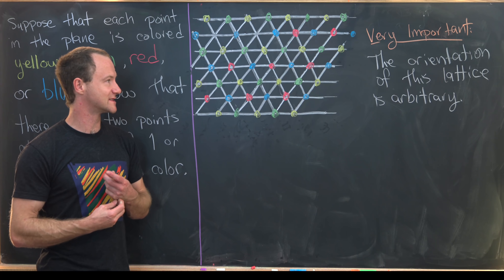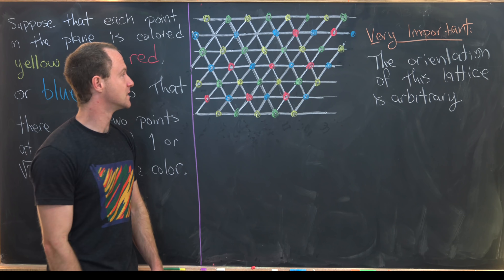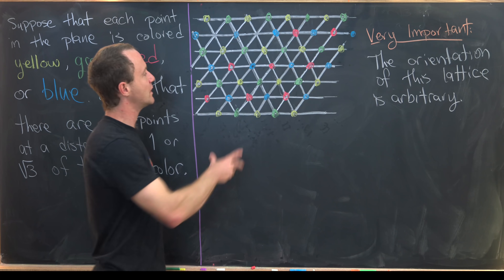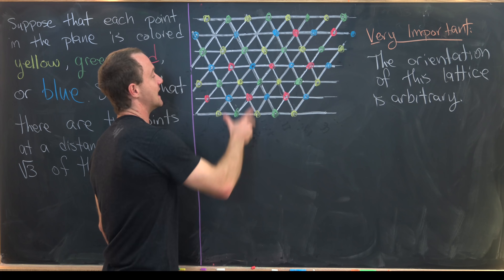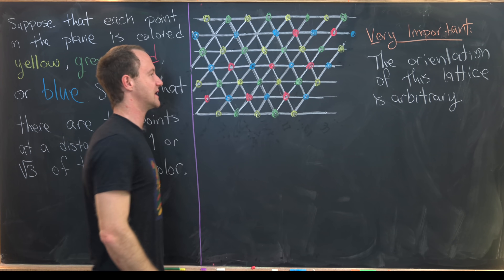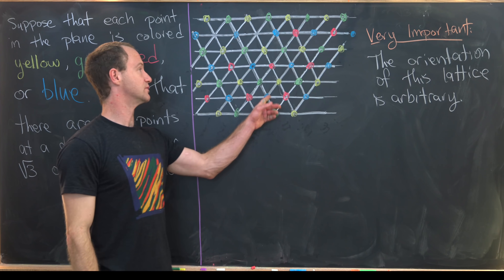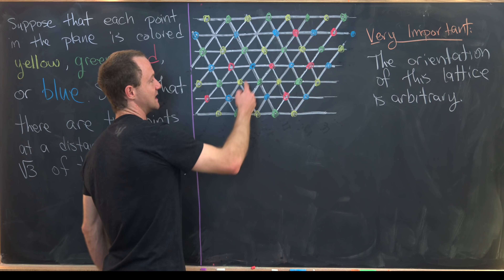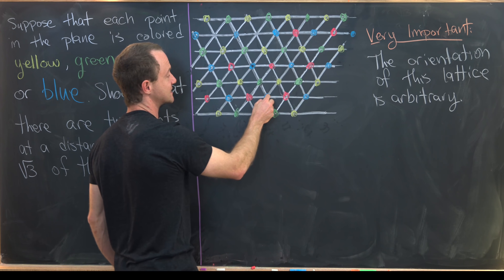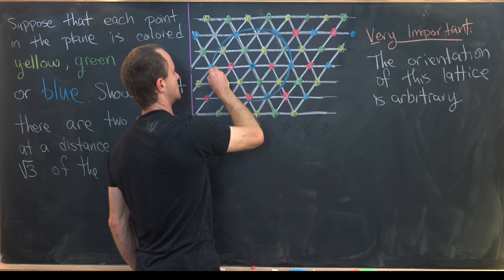Now we invoke the key remark: the orientation of this lattice is arbitrary. If we had drawn the lattice lines at any different angle, we would get this same coloring pattern rotated accordingly. Crucially, the blue point at the center remains fixed across all rotations. This means that considering all rotations of the lattice, every point on a circle of radius two centered at our original blue point must also be blue.